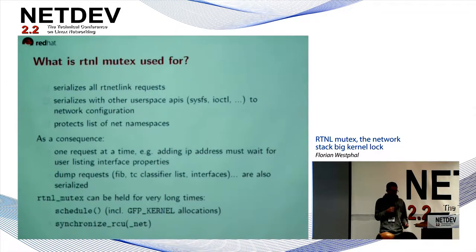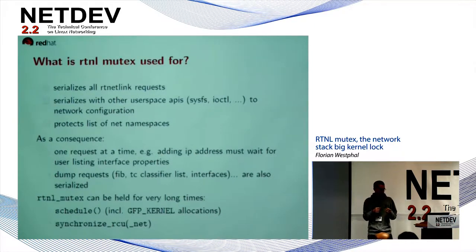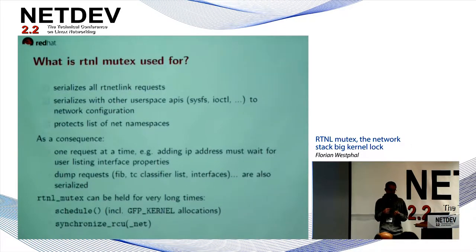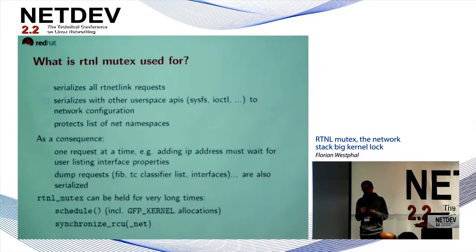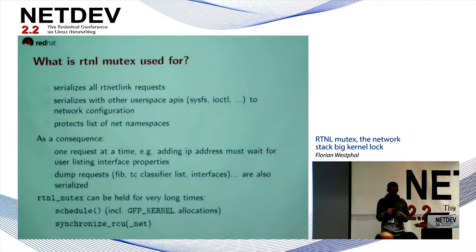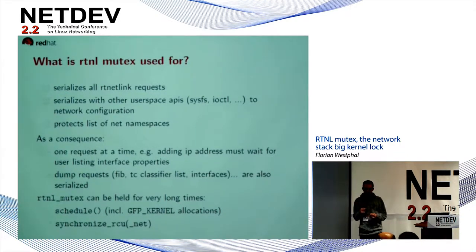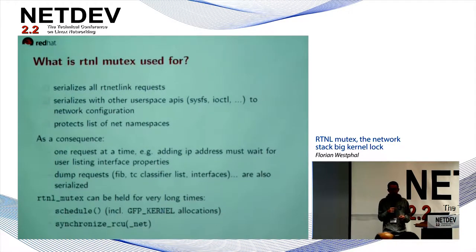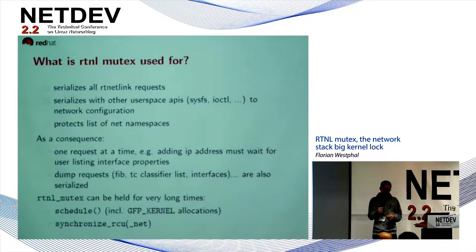The consequence is that the RTNL mutex can be held for a very long time. The do-it callback might sleep briefly because it has to wait for kernel memory allocation to complete. There are more expensive operations like synchronized_net, which could cause the thing to wait for a couple of milliseconds. And consider a routing daemon that wants to insert tens of thousands of routes — this single mutex becomes a real pain point, especially if you also have other users wanting to look at statistics and traffic counts in TC.